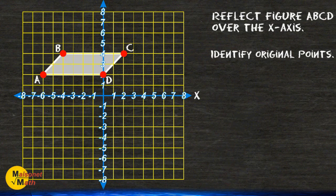Point A is located at negative 6, positive 2, B is located at negative 4, positive 4, C is located at positive 2, positive 4, and D is located at 0, positive 2.